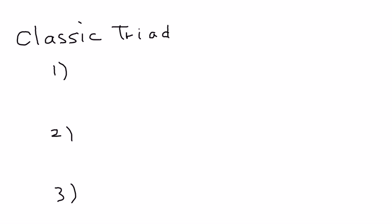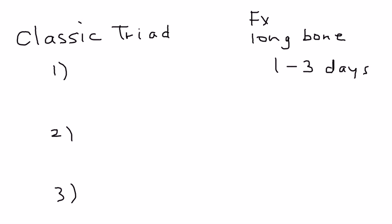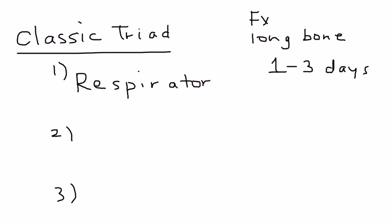Fat embolism has a classic triad — three very distinct things that happen when a person develops a fat embolism. Remember, the scenario is someone has a fracture, most commonly of a long bone in some sort of trauma event. Then approximately one to three days later, they develop symptoms of fat embolism. The first part of the classic triad is respiratory changes.